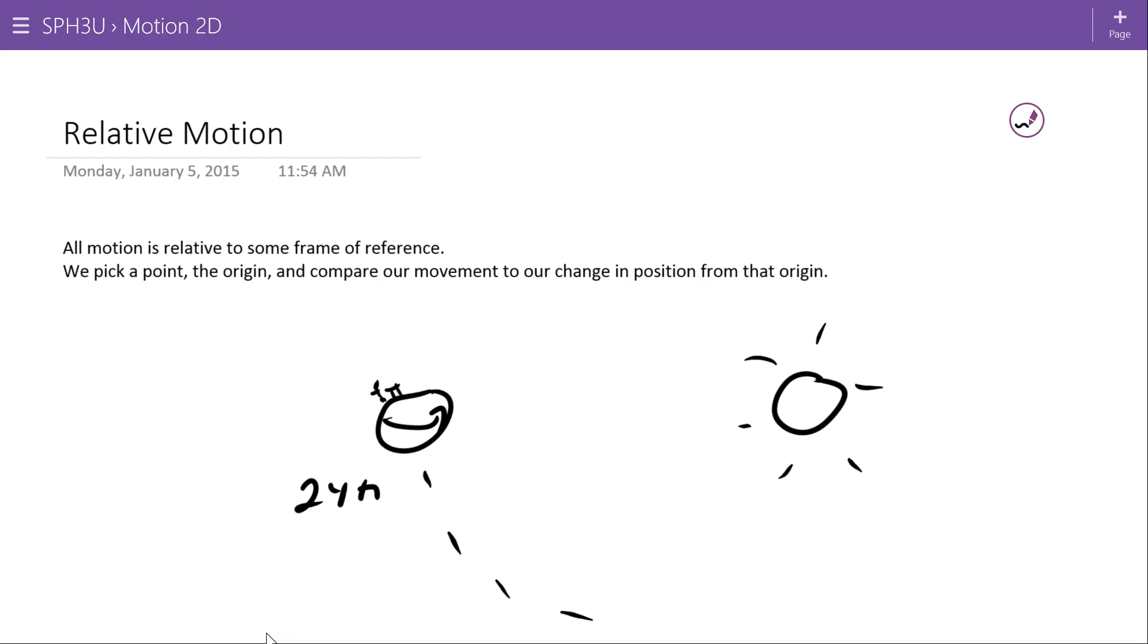It comes back to what we said about position in the first place. Remember that position is always relative to some fixed reference point. And so if that reference point is moving, then we might feel like we're staying still, but really it's just that us and the reference point are both moving at the same speed.